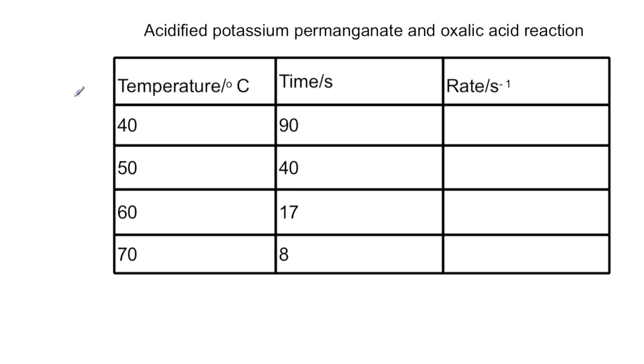Below 40 degrees the colour change isn't too sharp so we don't usually do it below 40 and above 70 it's really fast so you're not able to necessarily get the timing right. So we usually do it between these temperatures.